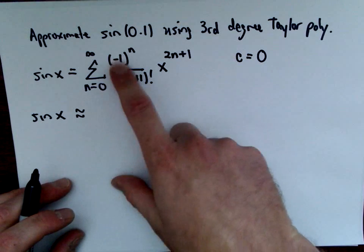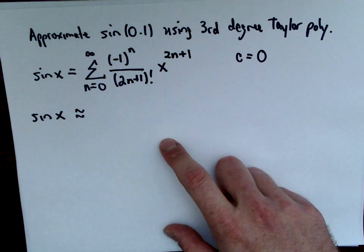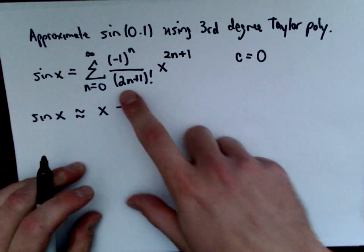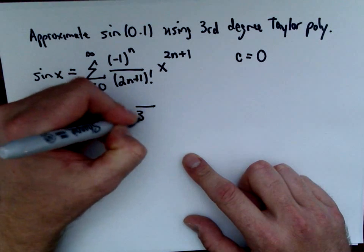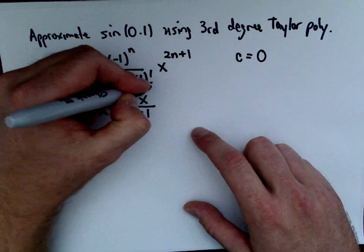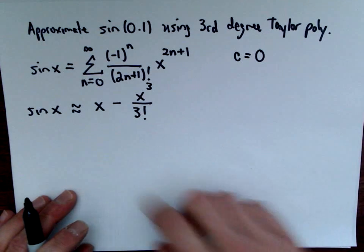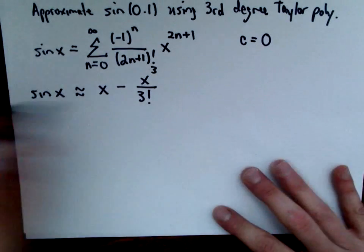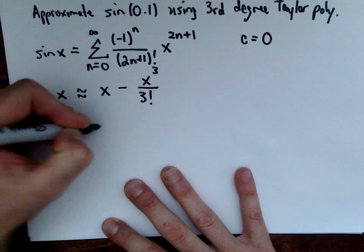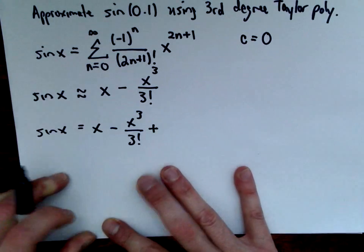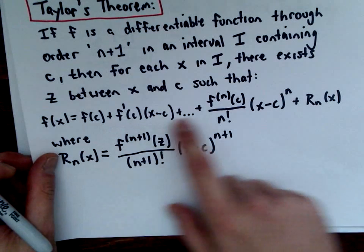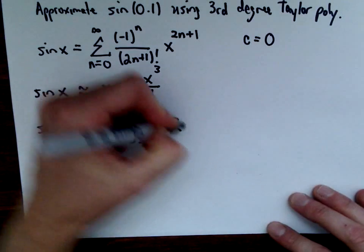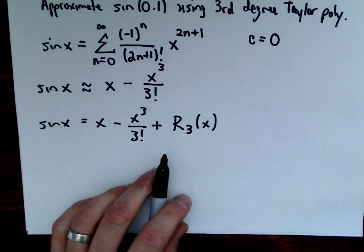We're going to expand this summation until we get to degree 3. If I plug in n equals 0, I get negative 1 to the 0, 1 factorial, and x to the first — that all simplifies to x. If I plug in n equals 1, I get negative 1 to the first giving a negative, 3 factorial in the denominator, and x to the third power. So our third degree polynomial for sine of x is x minus x cubed over 3 factorial. It's correct to say that sine of x equals x minus x to the third over 3 factorial plus the remainder r sub 3 of x.